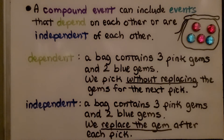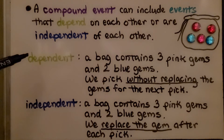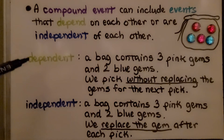For independent events, the bag contains three pink gems and two blue gems and we replace the gem after each pick. We have an equally likely chance of picking one of the five gems. In the dependent case, if we pick one and don't replace it, our outcome will be out of four gems, not five. The outcome of the second pick depends on the first pick.